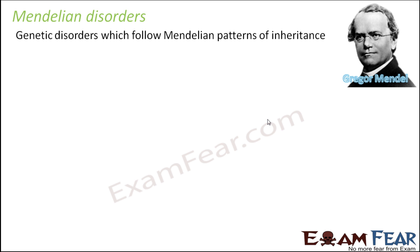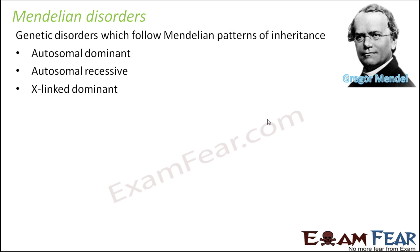Even though we would not say that genetic disorders are very common — in fact they are quite rare, affecting almost one in several thousands — some of these Mendelian disorders can be classified into four types: autosomal dominant, autosomal recessive, X-linked dominant, and X-linked recessive.